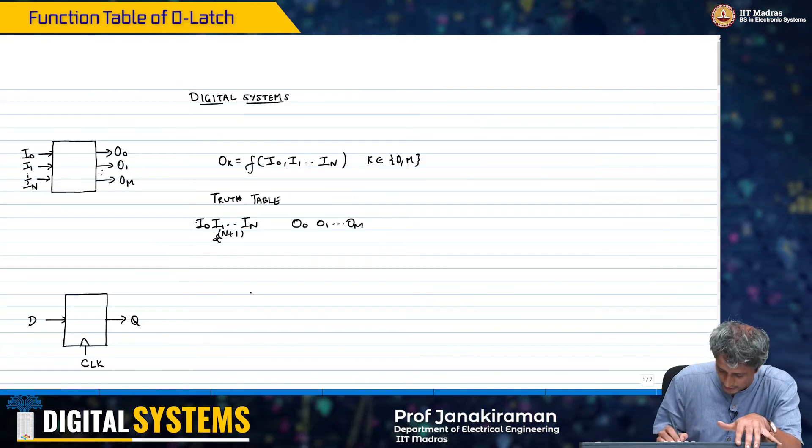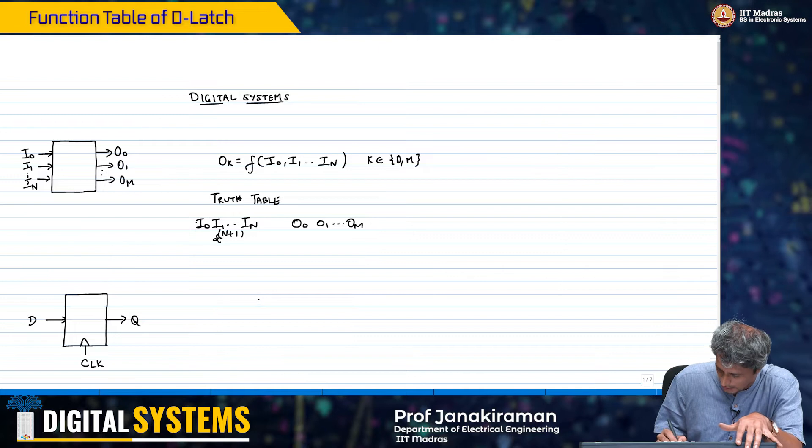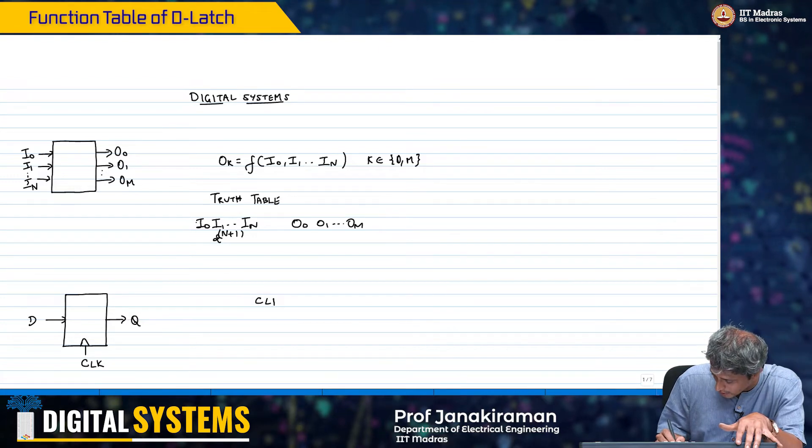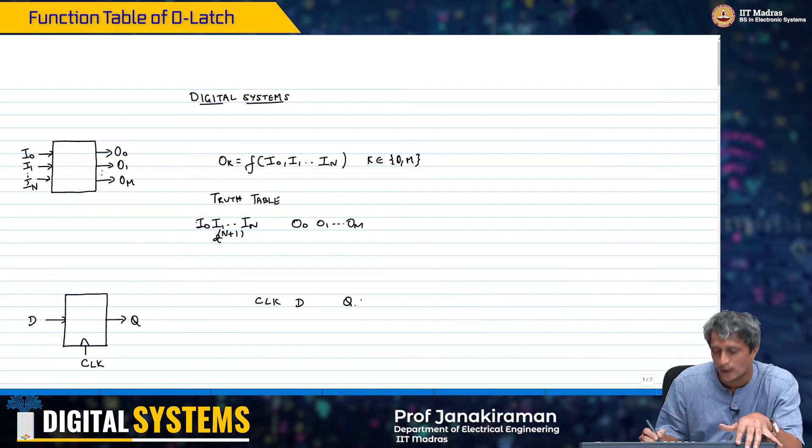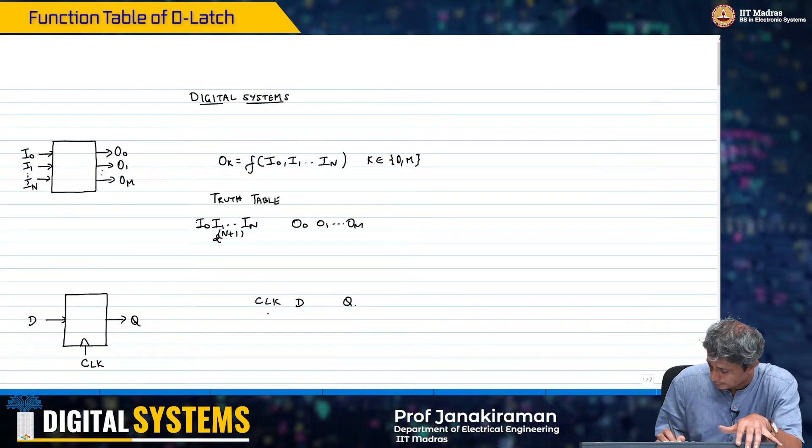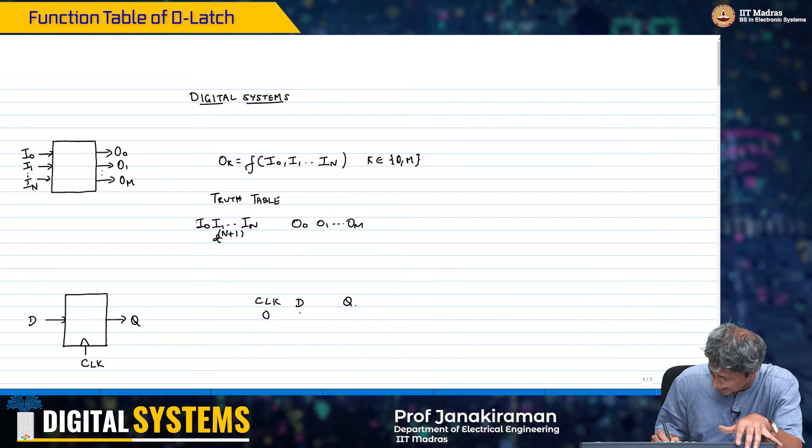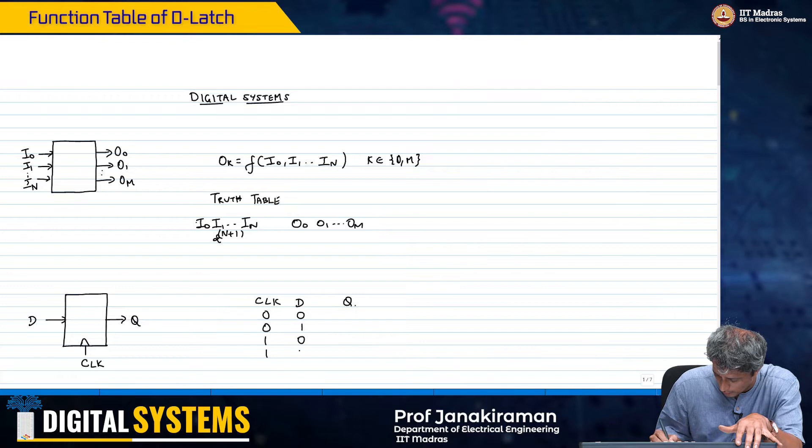Now we could try to do something very similar. The inputs to this system are obviously clock and D and you have only one output Q. We will start, you know, we could actually do this: 0 0, 0 1, 1 0, 1 1.